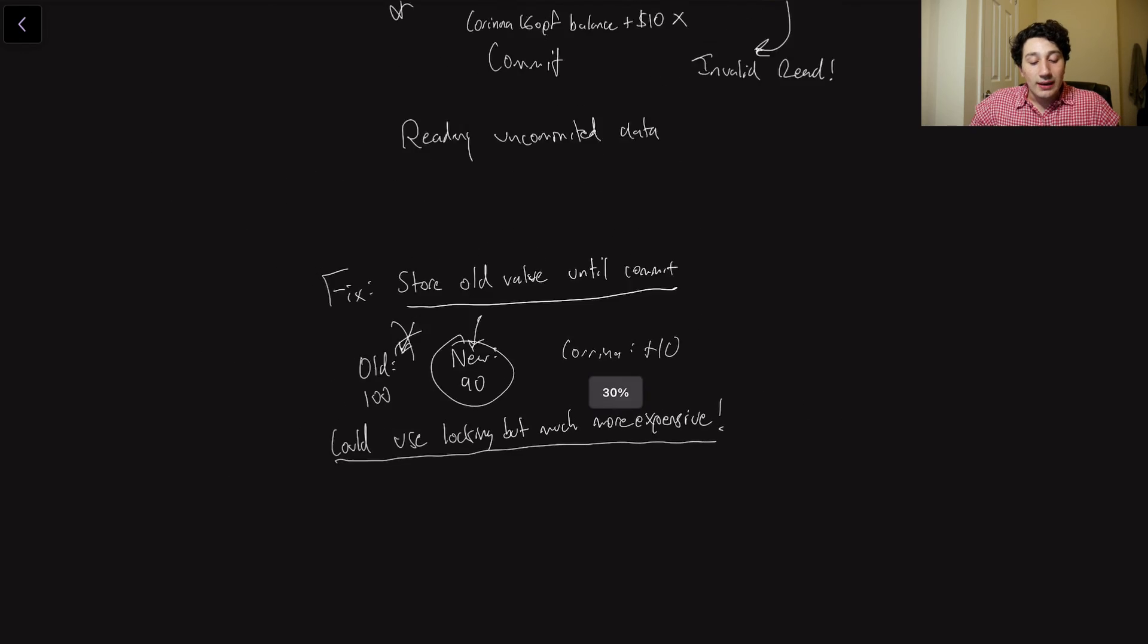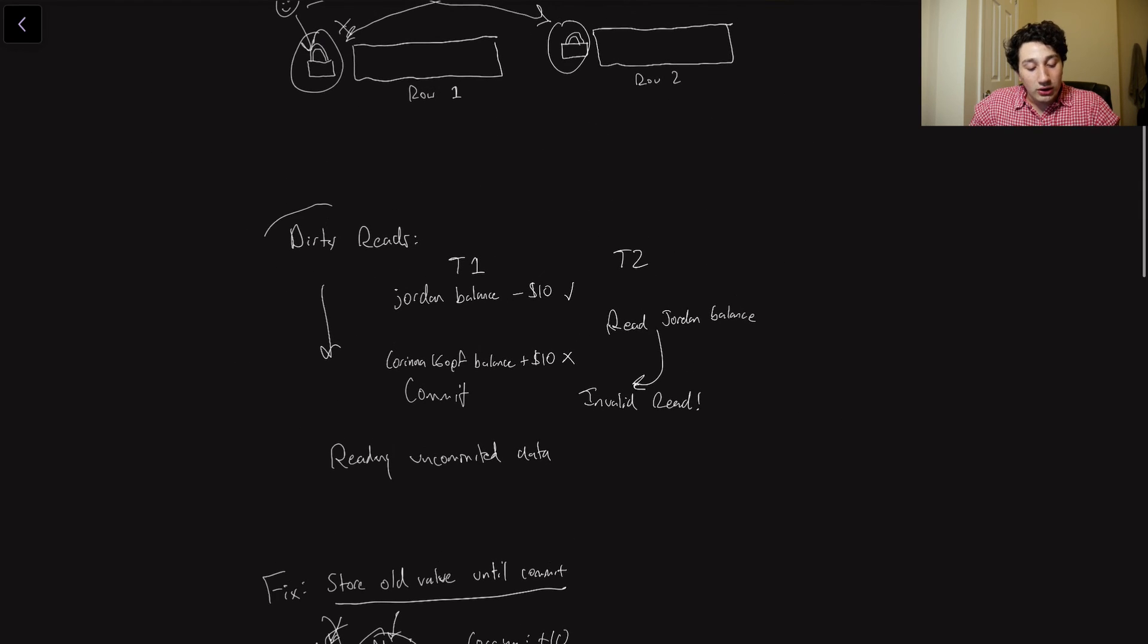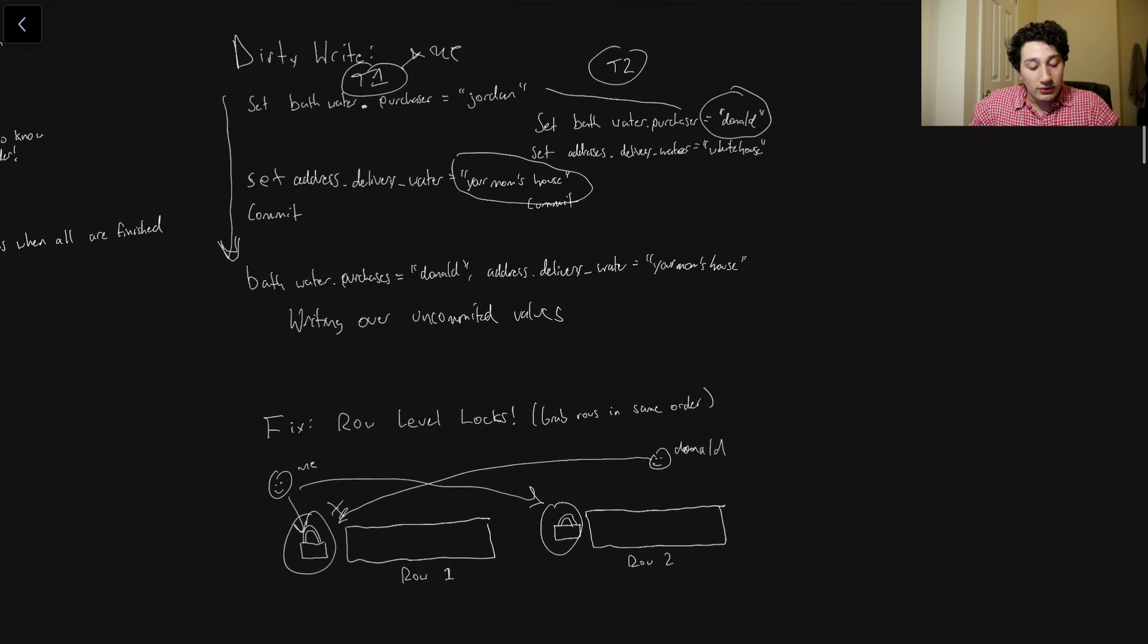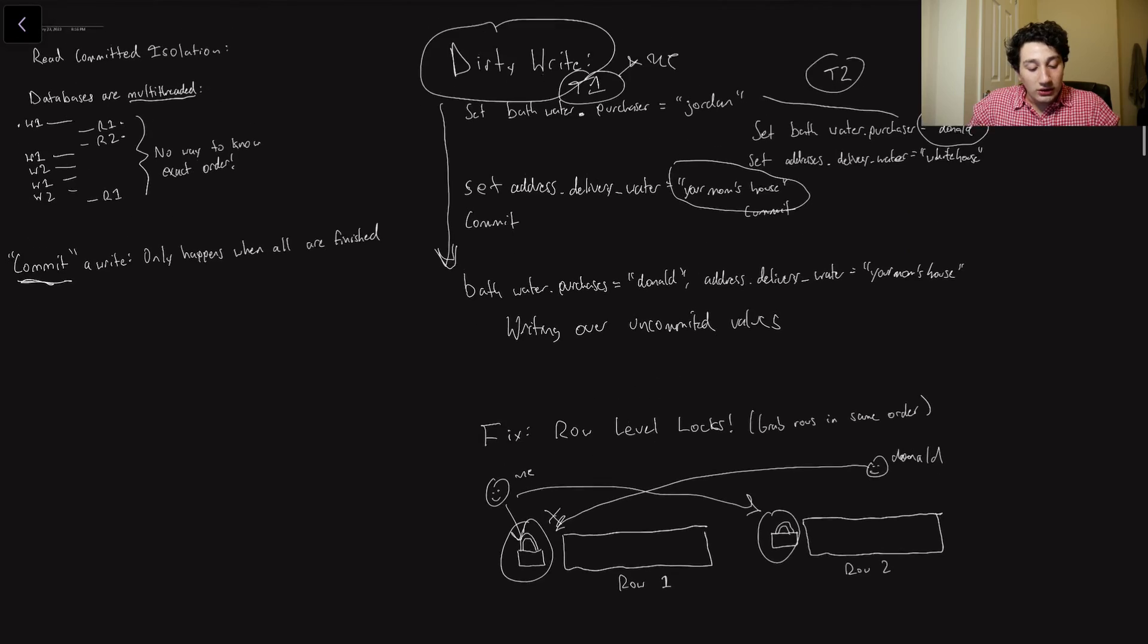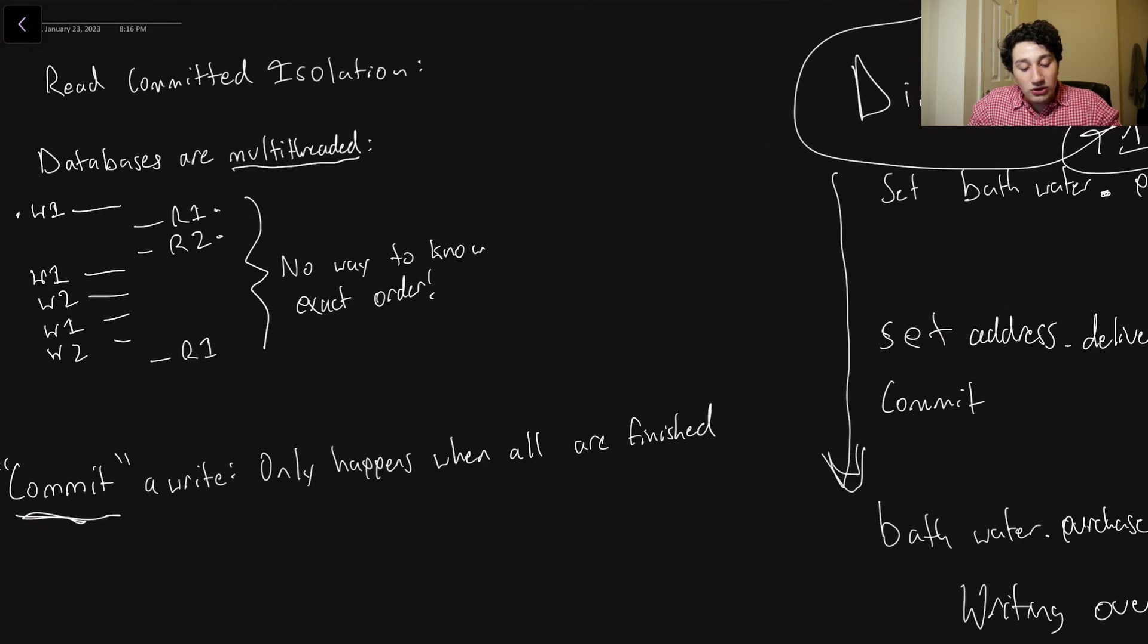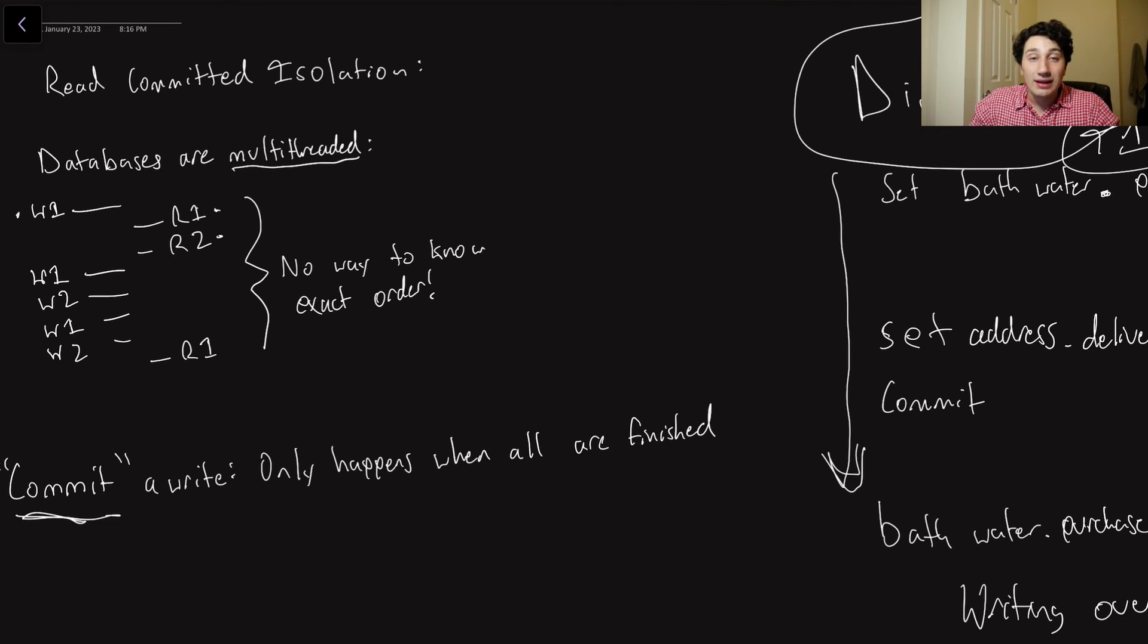So ultimately, I've now covered two types of race conditions. We've got our dirty reads right here. And then scrolling all the way up, we've got our dirty writes. So basically, ultimately, any database that is going to protect against both dirty reads and dirty writes is one that is implementing read committed isolation.